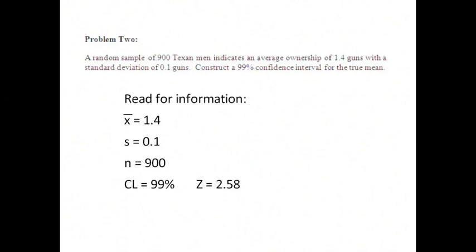Now we want to read this problem for information. We notice that a random sample of 900 Texas men indicates an average ownership of 1.4 guns with a standard deviation of 0.1 guns. Construct a 99% confidence interval for the true mean. We notice that n is 900, x-bar is 1.4, s is 0.1. We have a 99% confidence interval, and we can go to our tables and find that our z-score is 2.58.